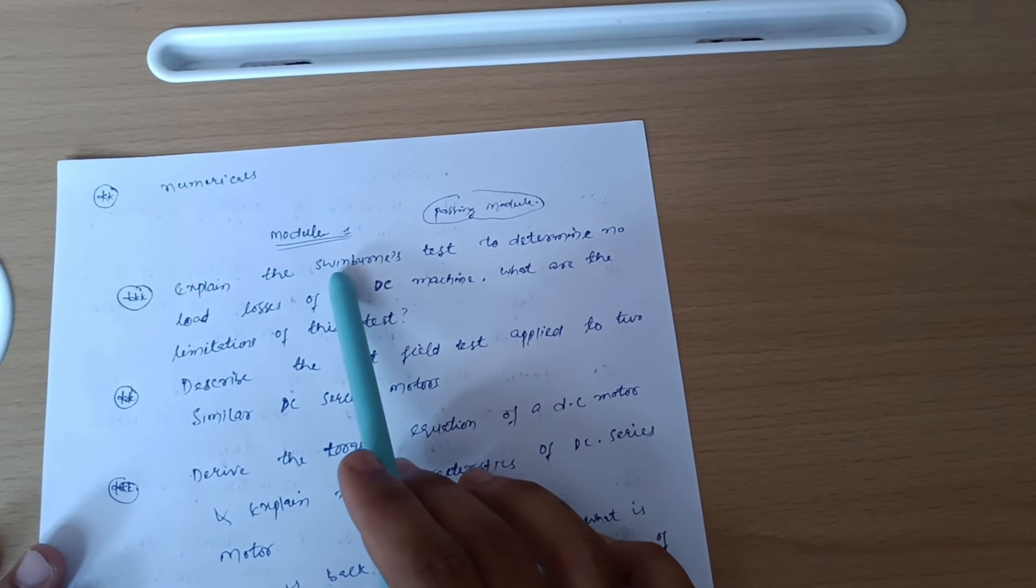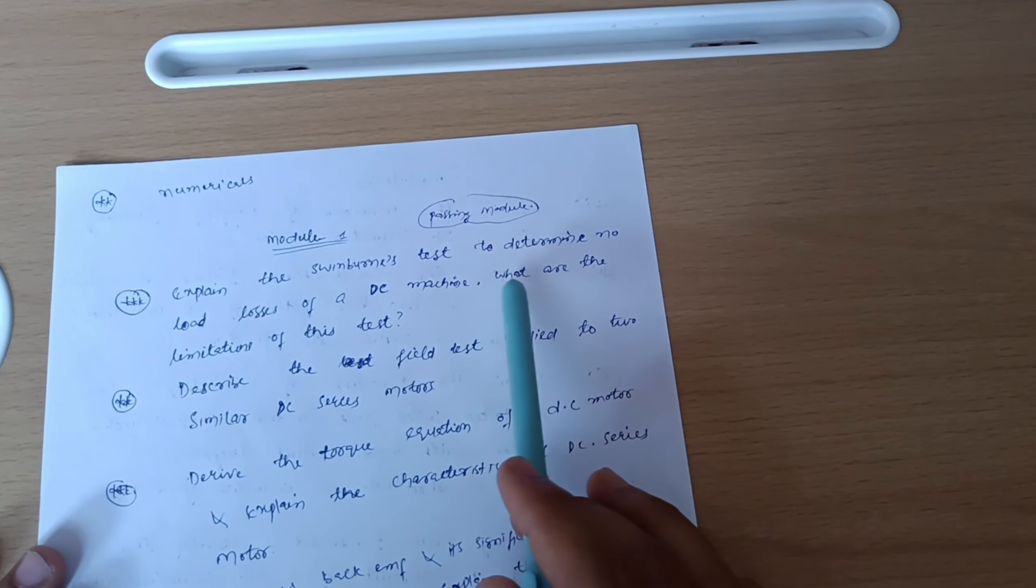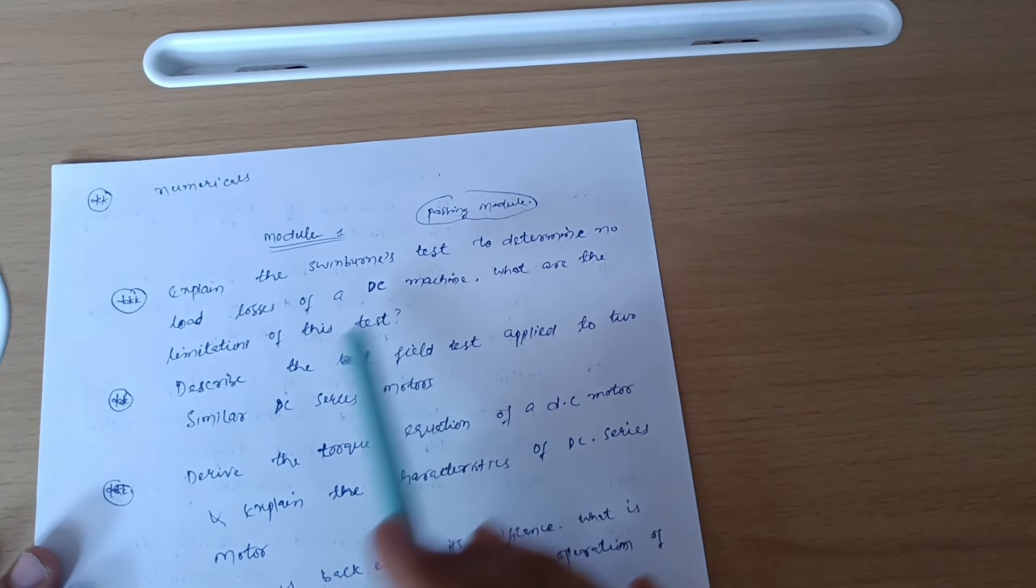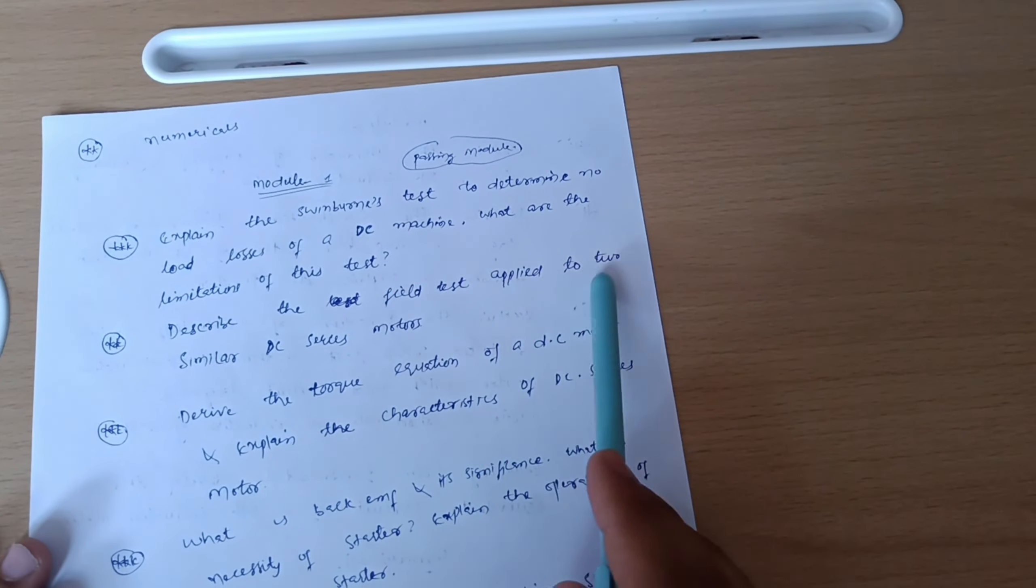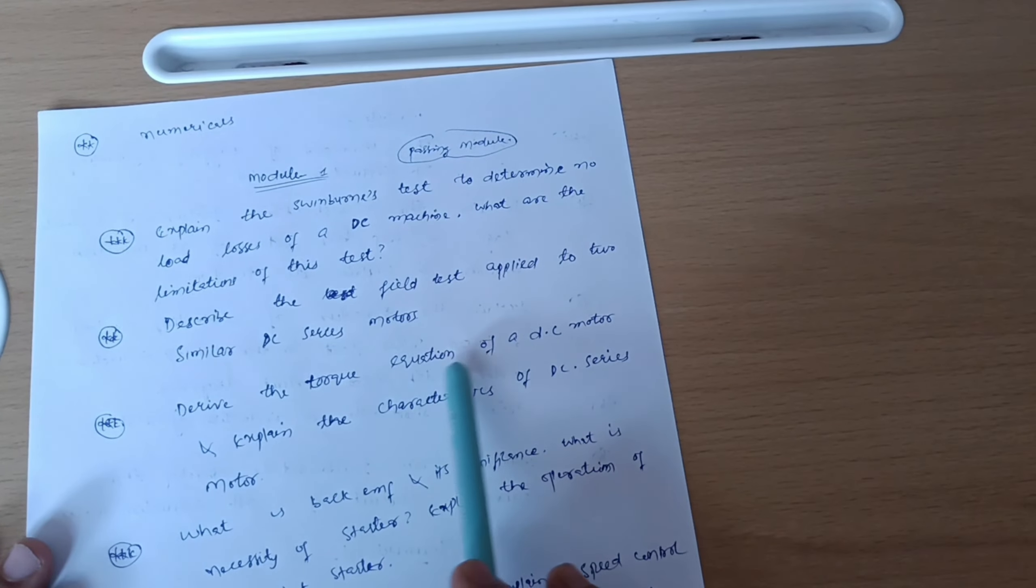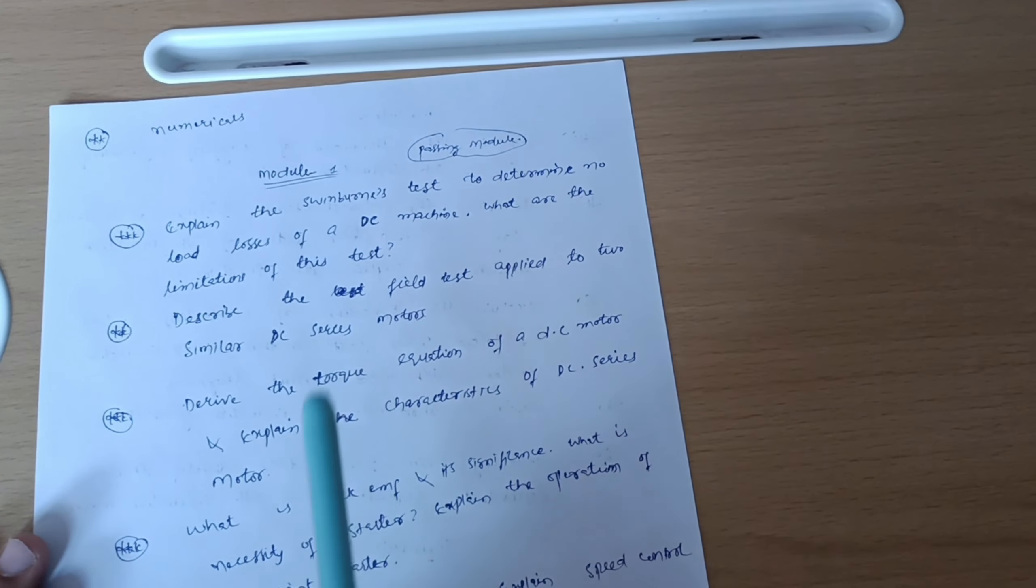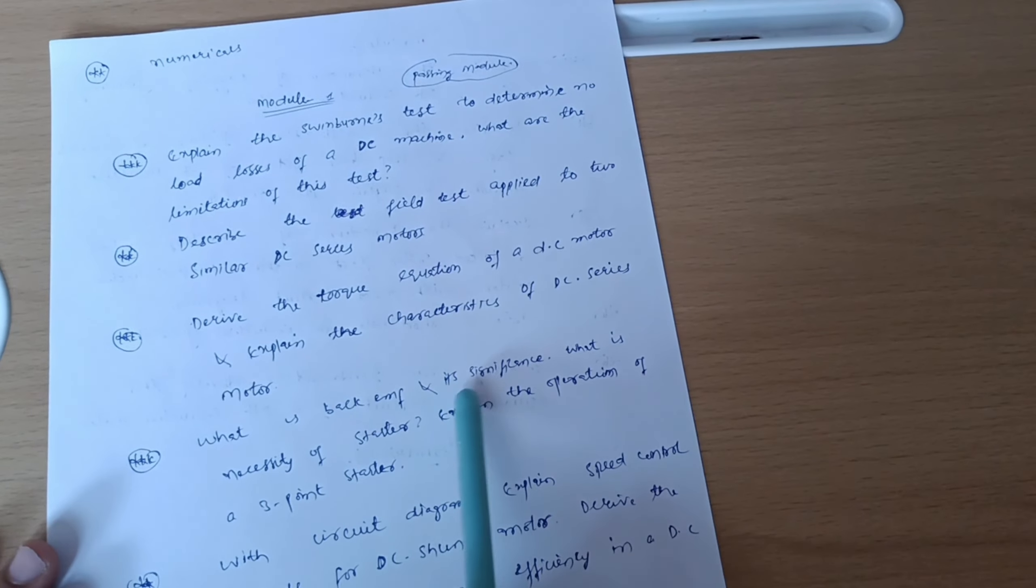Next is Module 1, that is passing module again. Explain the Swinburne's test to determine no load losses of DC machine. What are the limitations of this test? Describe the field test applied to two similar DC series motors. Derive the torque equation of DC motor and explain the characteristics of DC series motor. What is back EMF and its significance?